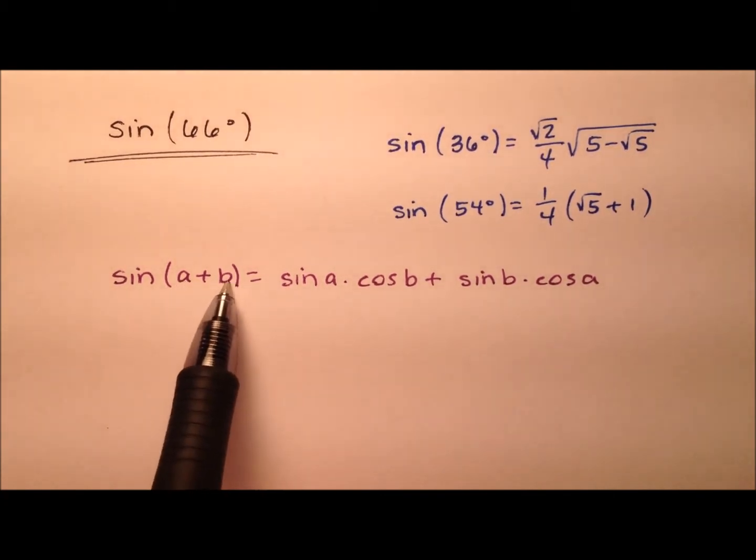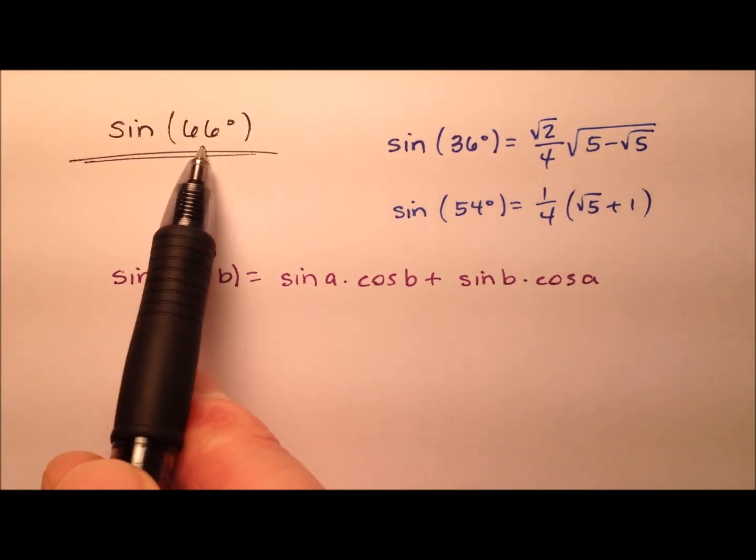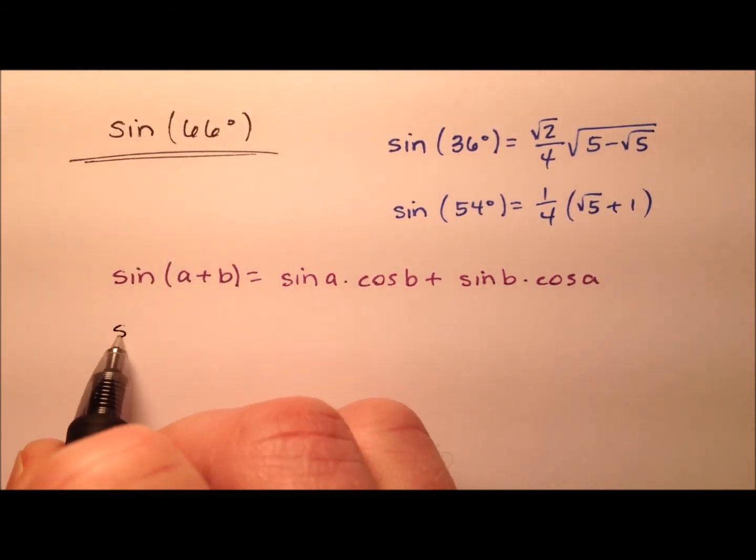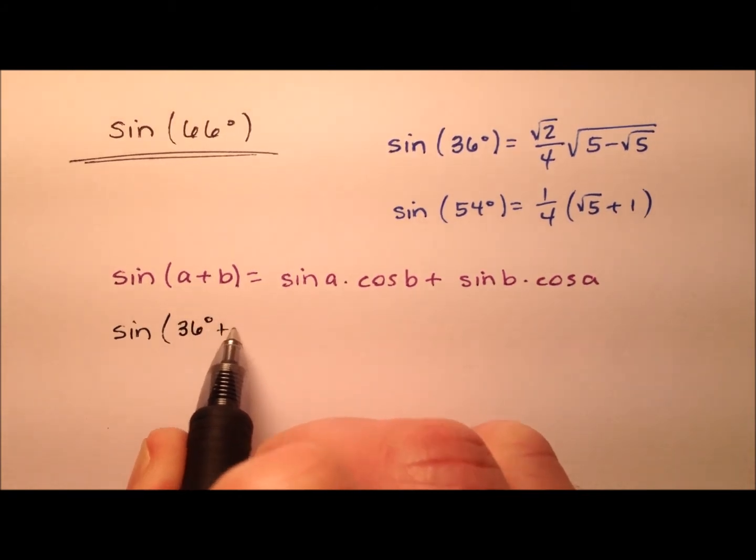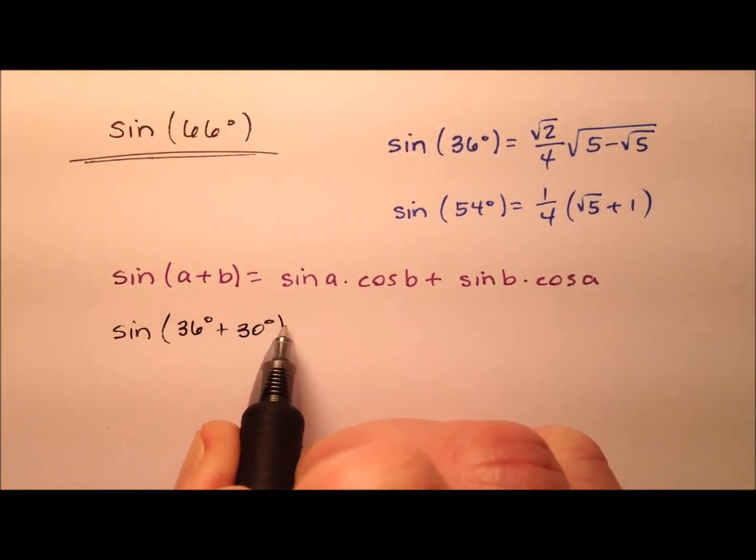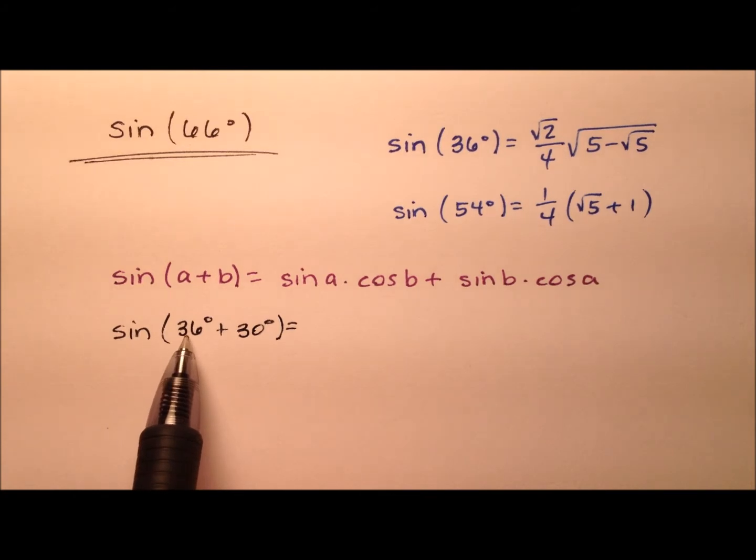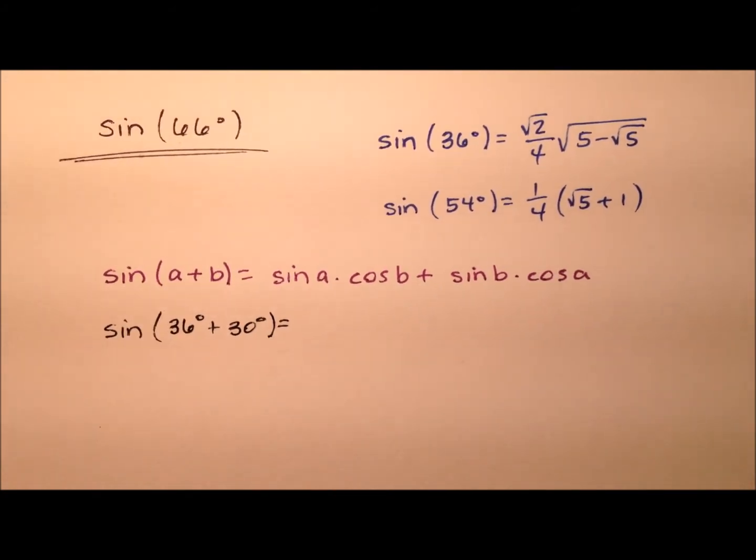So we need to come up with two angles that are nice angles to work with that add up to 66 degrees. So let's use 36 degrees and 30 degrees, and those are really nice to work with, and of course, 36 plus 30 does add up to 66.